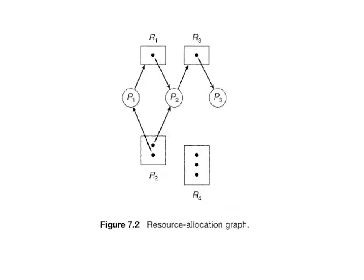The next topic is the resource allocation graph. Deadlock can be described more precisely in terms of a directed graph called the system resource allocation graph. This graph consists of a set of vertices V and a set of edges E. The set of vertices V is partitioned into two different types of nodes: P = {P1, P2, ..., PN}, representing the set of processes.